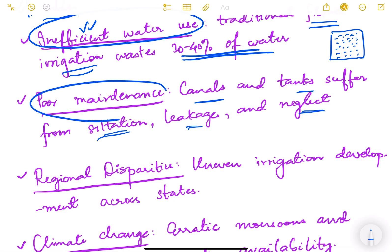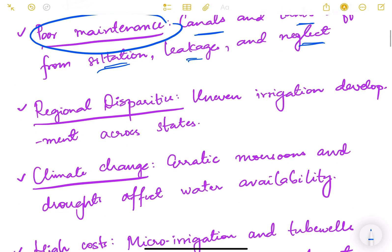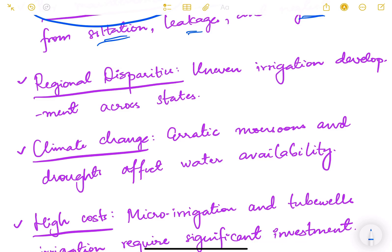There are regional disparities in our country. There is uneven irrigation development across various states. Not all states are having good irrigation systems, so regional disparity is another issue.